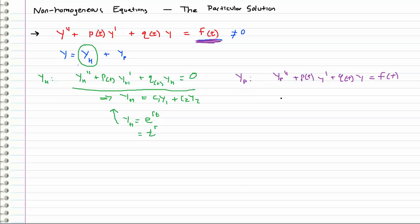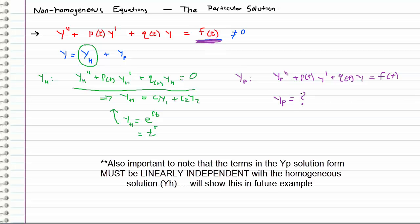We are going to be doing the same thing for the particular solution, except we're not going to be assuming e to the rt or t to the r. We are going to be assuming something based on what f(t) is, and we're going to pick our yp solution form in a way that's actually going to give us an answer.